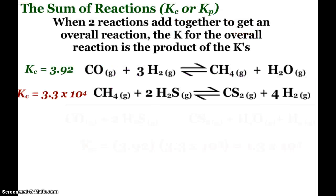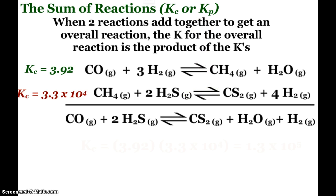Last thing, there are many times where we add up reactions to get an overall reaction. And so here, when I add this reaction up, I'm going to get rid of the methane. I've got three hydrogens over here, so I can get rid of all but one there. And that's my overall reaction. Well, to get the K, either Kc or Kp, doesn't matter.